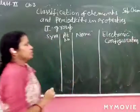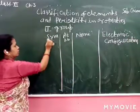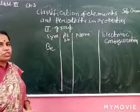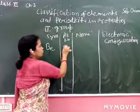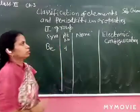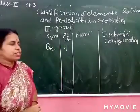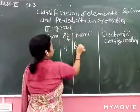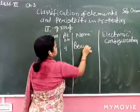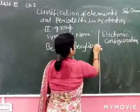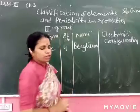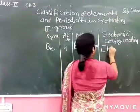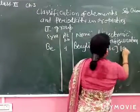First symbol: Beryllium. What is its atomic number? 4. What is its name? Beryllium. And its electronic configuration is [He] 1s².